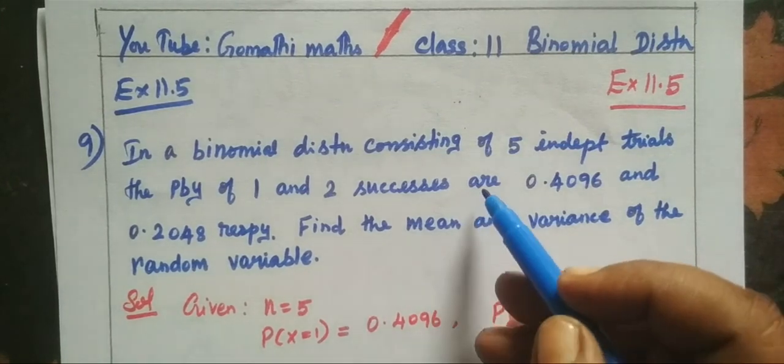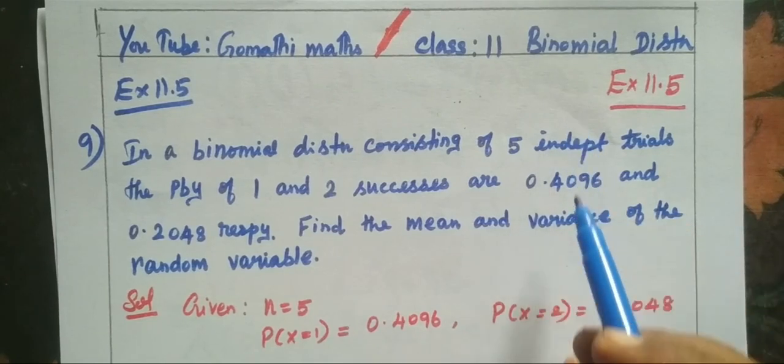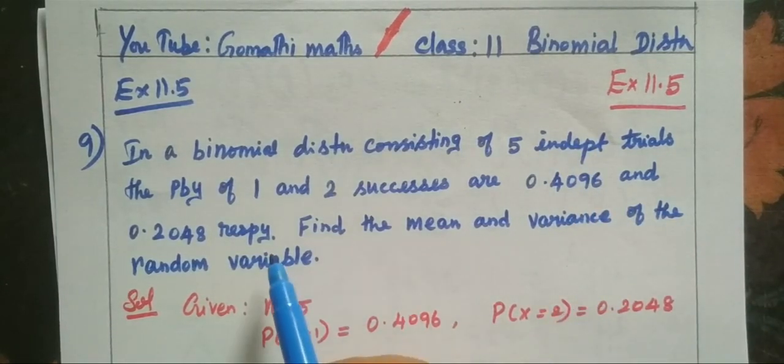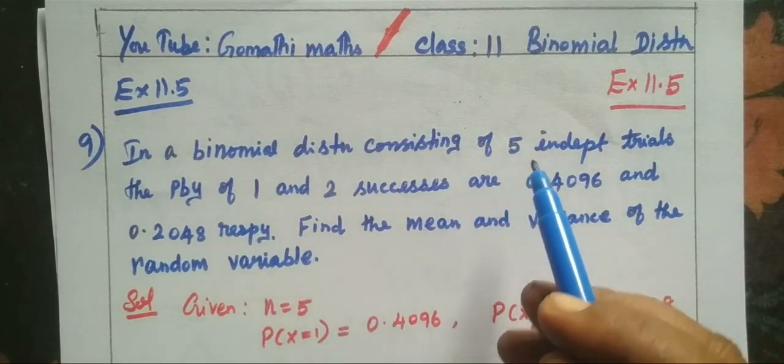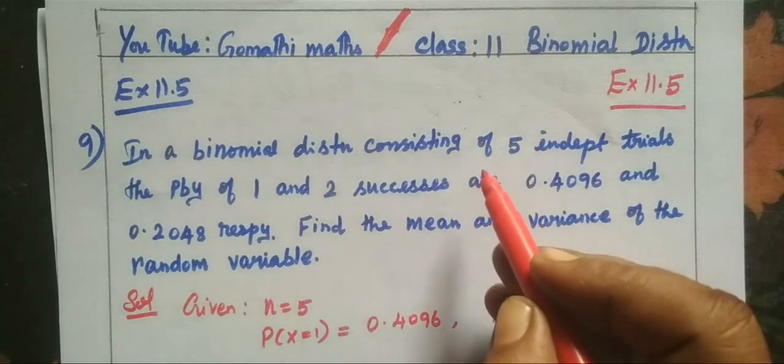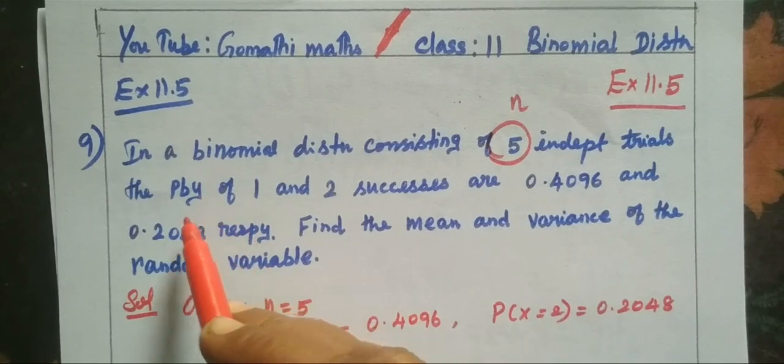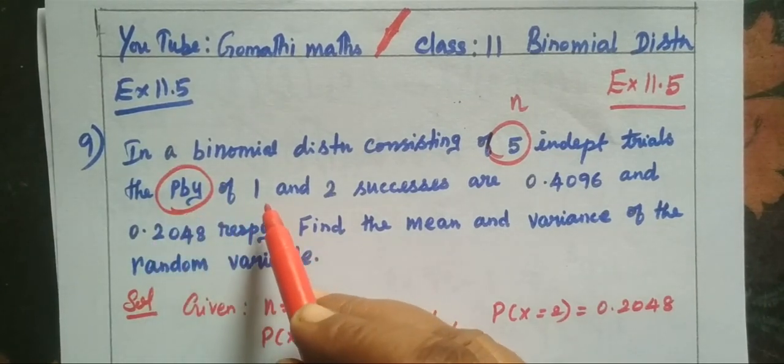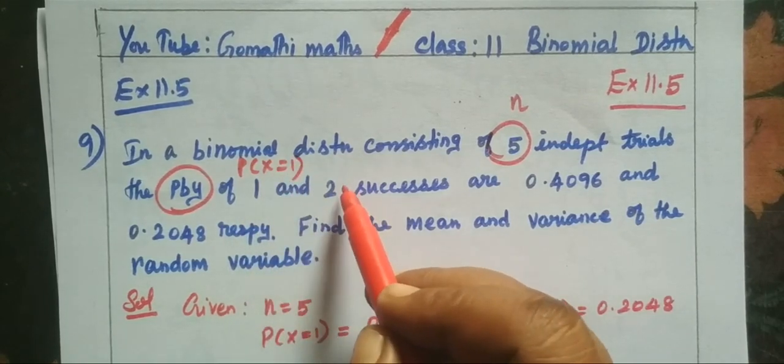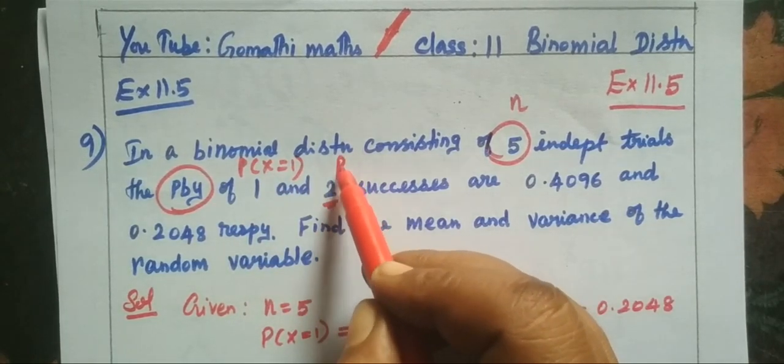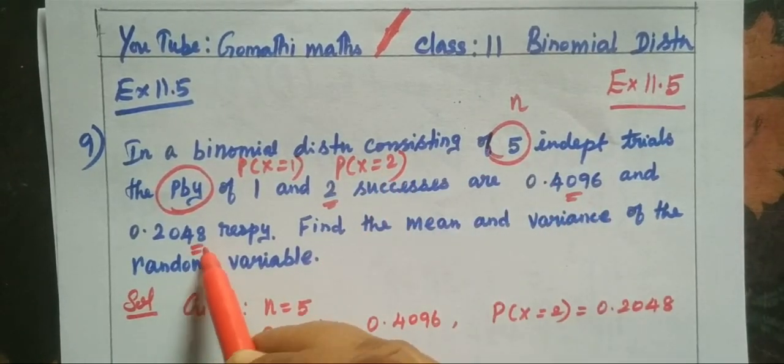So, welcome for class 11 binomial distribution exercise 11.5 question number 9. In a binomial distribution consisting of 5 independent trials, the probability of 1 and 2 successes are P(X=1) is 0.4096 and P(X=2) is 0.2048 respectively.